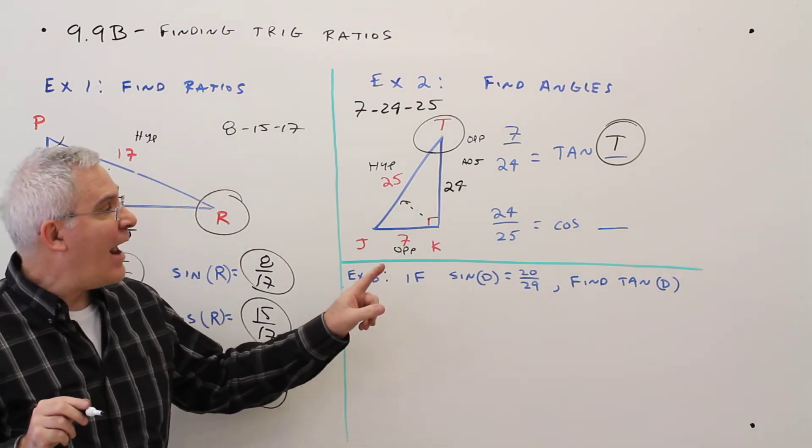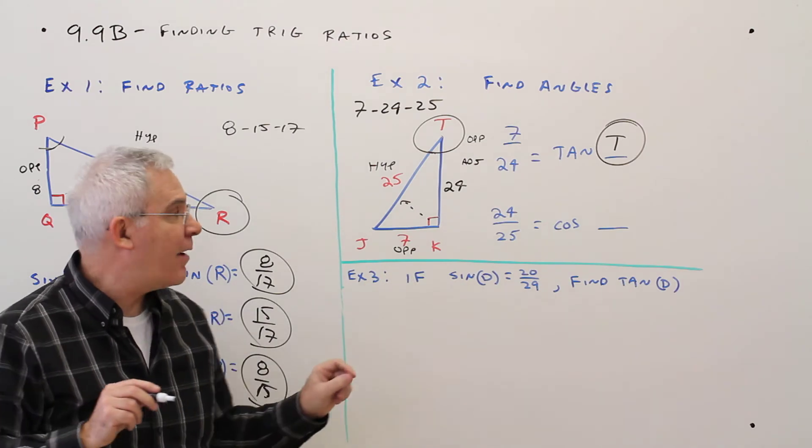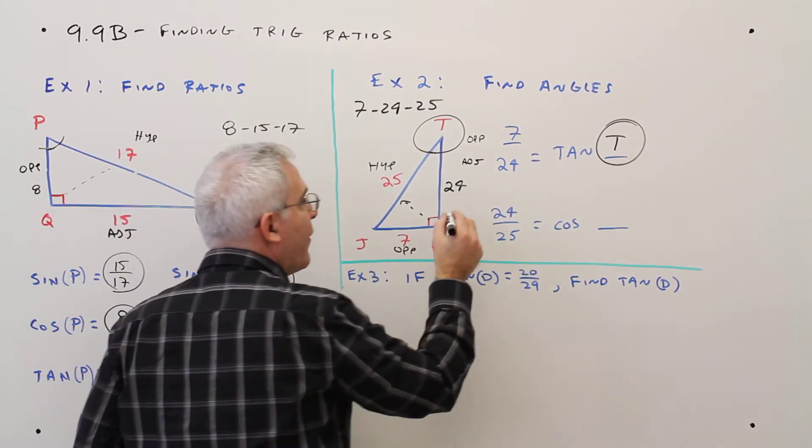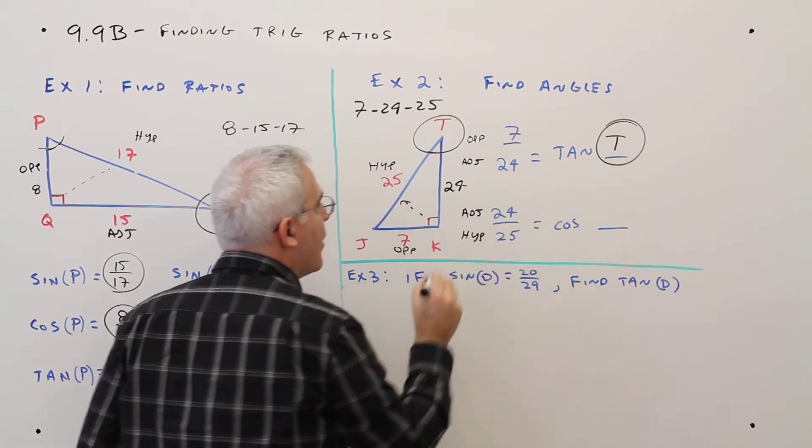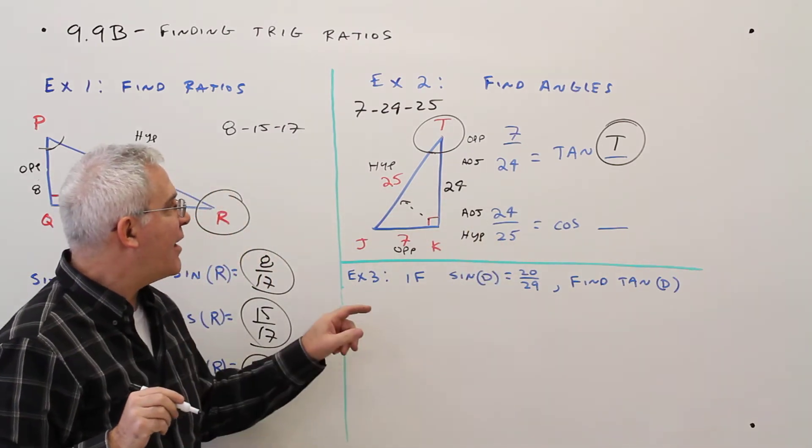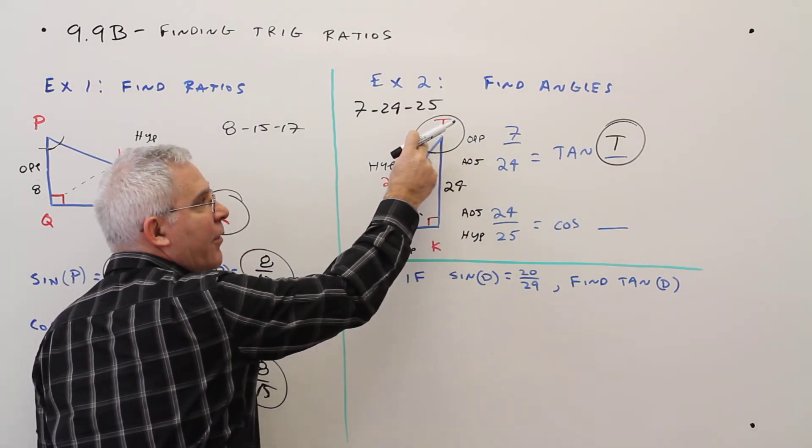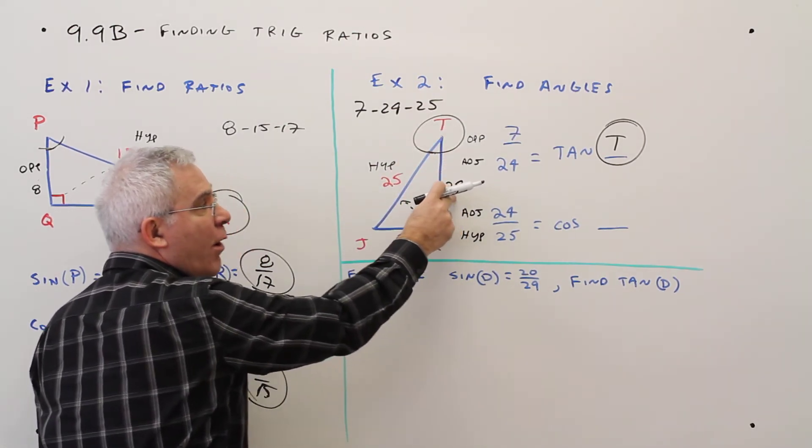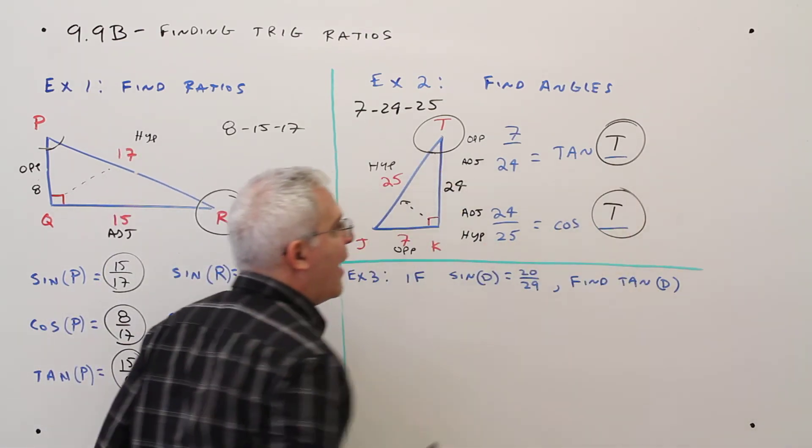Alright, I want to find the angle such that the cosine of the angle is 24 over 25. Well that's going to be adjacent over hypotenuse. So which angle has 24 as the adjacent? Oh, again if angle T is the reference angle, 24 would be adjacent to it. So once again, it would be angle T.